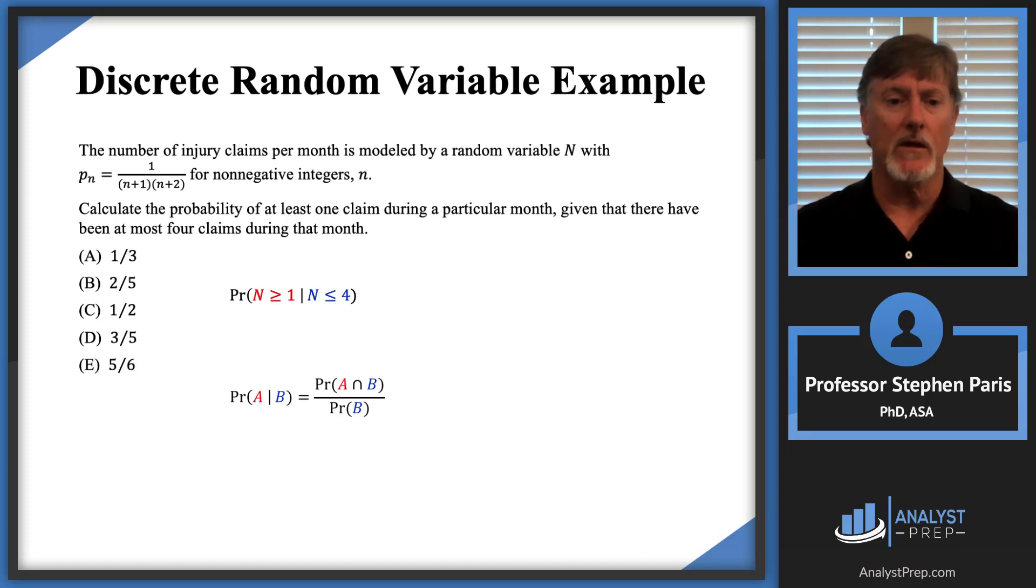I'm going to apply this with A being—let me color code things here—A being the event that N ≥ 1, and B being the event that N ≤ 4. So when I directly apply the conditional probability formula there at the bottom of the page...